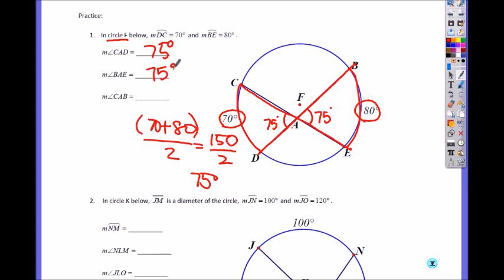What about angle CAB? CAB must be linear paired with 75. So you do 180 minus 75, which is 105.